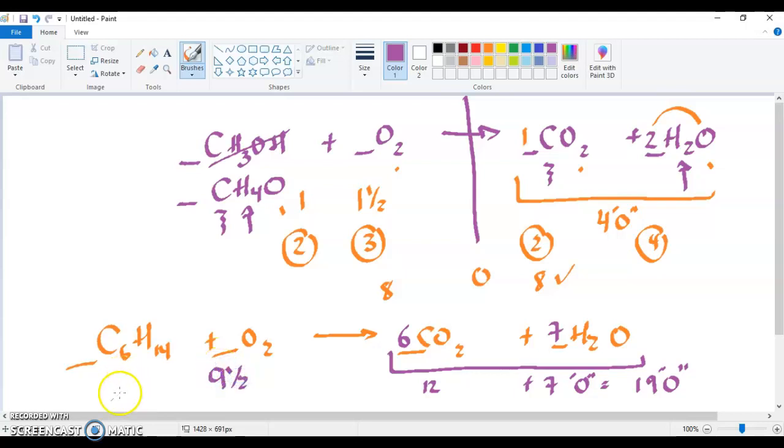Now I have to double everything. The final answer is 2 to 19 to 12, because I'm doubling that 6, to 14. Check that out, and you'll see that it works. That is two examples of balancing combustion reactions.